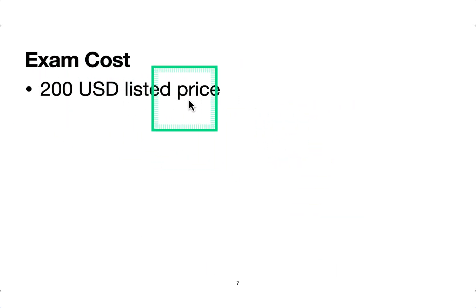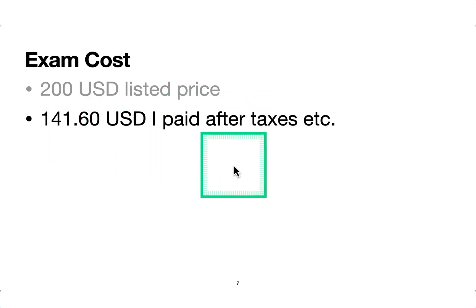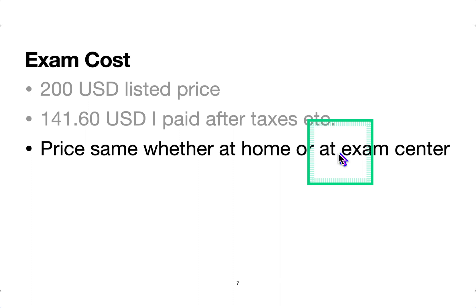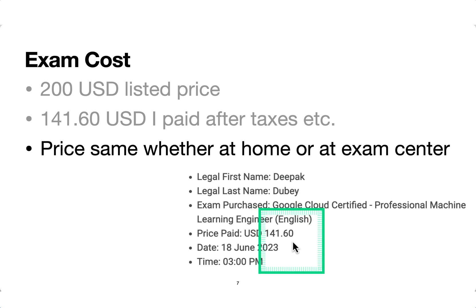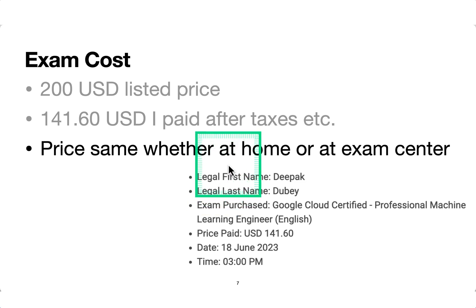Exam cost: the listed price is $200 USD. In India, with taxes I paid $141.60 — around $120 plus GST. The price is the same whether you take it at home or at an exam center, so that's up to you. I find it more convenient to take it at the exam center because you have more freedom — you can take bathroom breaks, and you don't have to stare at your computer non-stop. When taking it remotely, somebody is watching over you, you have to ensure your internet connection doesn't break, and you must stay inside a room. So I almost always prefer the exam center.